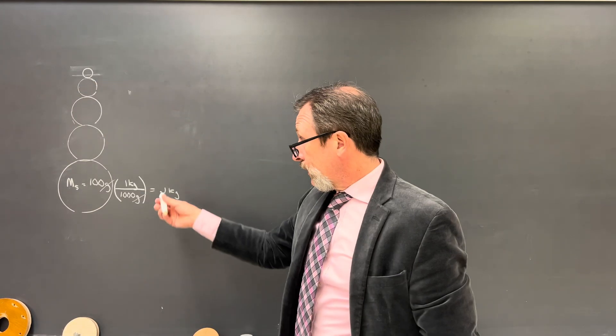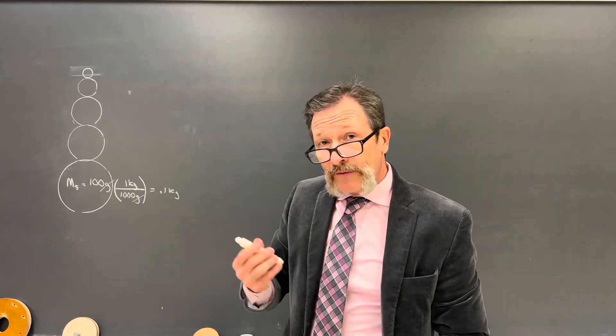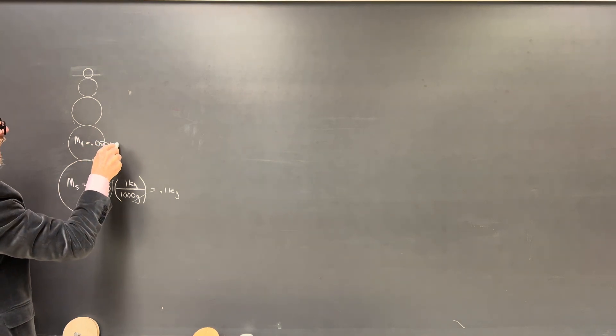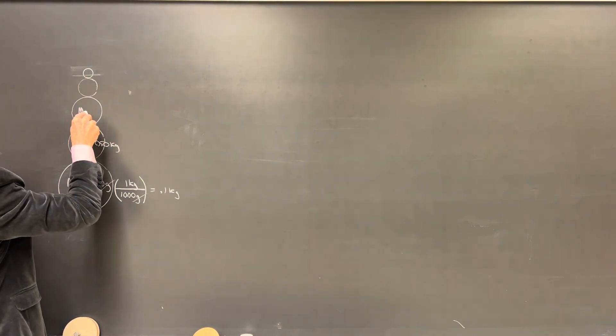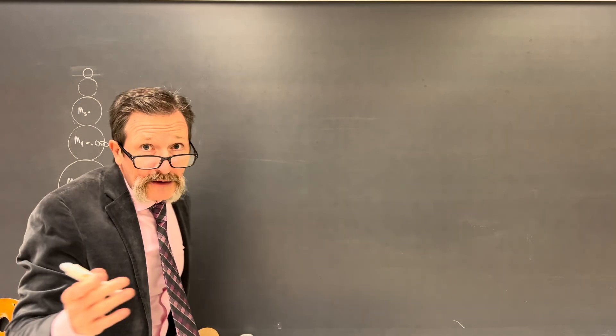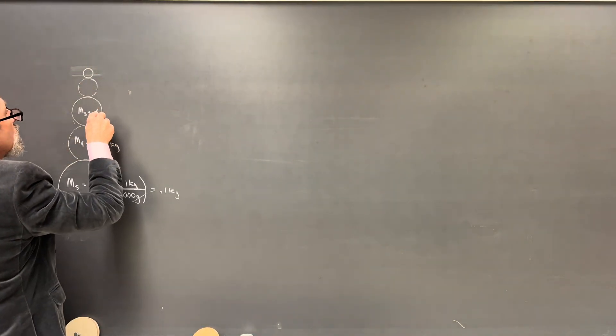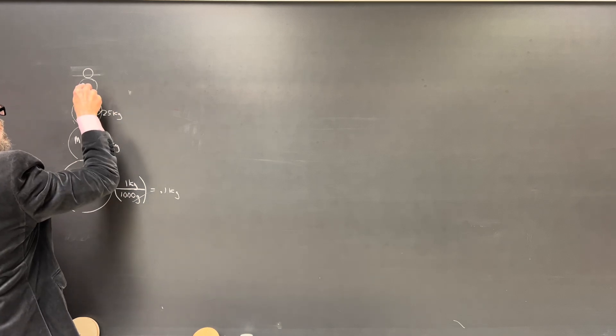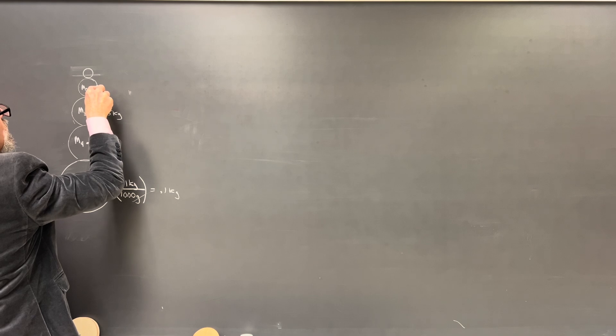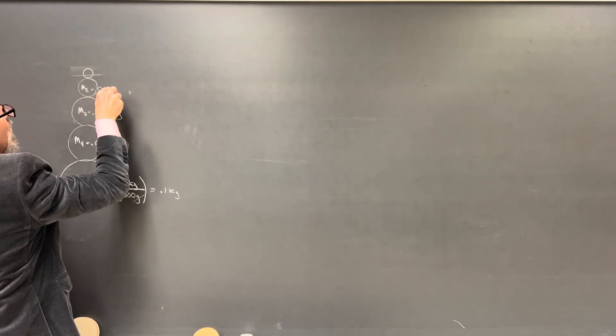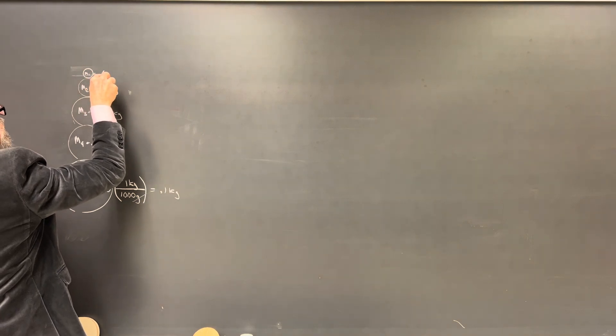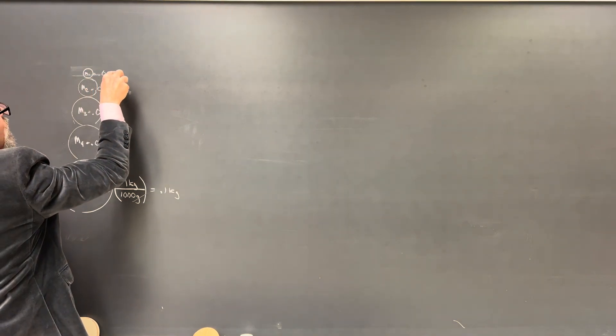If the next one is half of that, then it's going to be 50 grams. So I'll put 0.050 kilograms. Mass three would be 25 grams, which would be 0.025 kilograms. Mass two is going to be 0.015 kilograms. And mass one is going to end up in 0.005 kilograms.